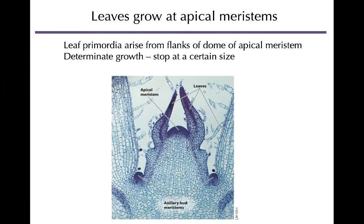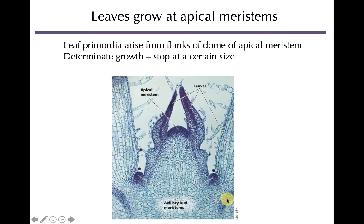Leaf growth occurs at the apical meristems — regions of stem cells — at the tips of shoots, where a lot of cell division occurs forming new leaves. Unlike stems and roots, leaves have determinate growth, meaning they don't just keep growing and growing; they reach a set size and stop.